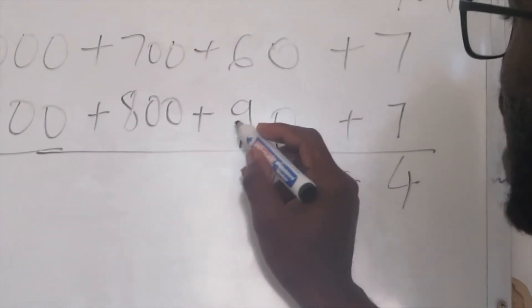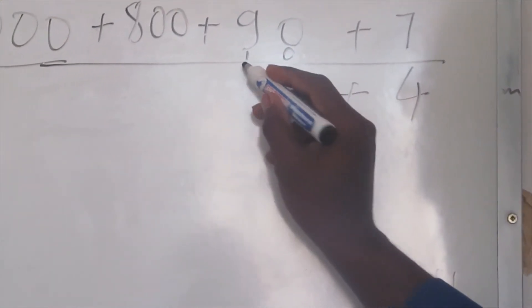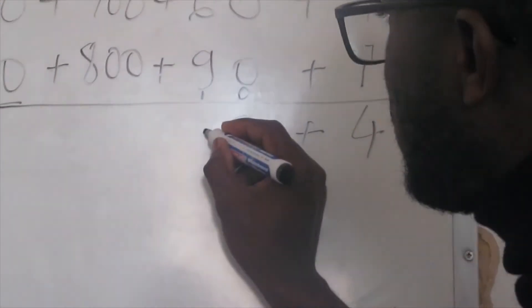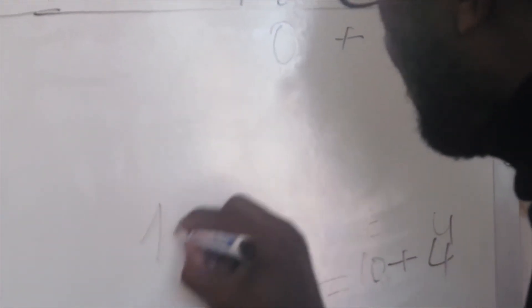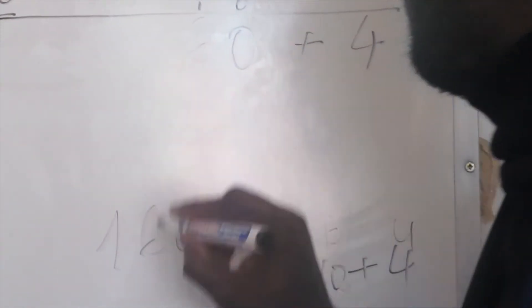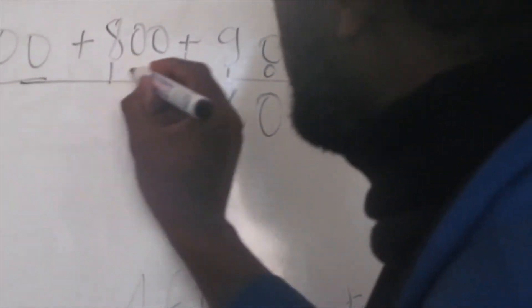60 plus 90 is 150, plus 10 is 160. So here, how many digits we need? Only two, but we have 16. We have 100, so we put the 6 here. This one we carry over—this 100 goes to this side.